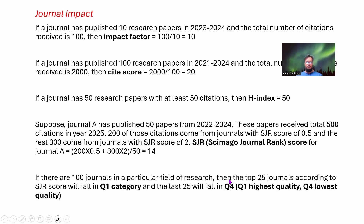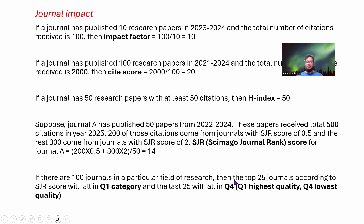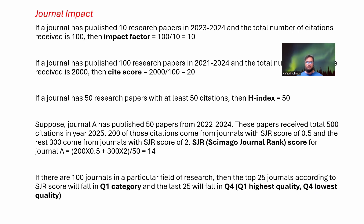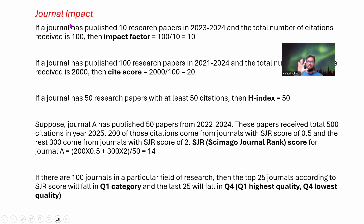The final thing you need to know is the journal quartile. There are Q1, Q2, Q3, and Q4 journals. Suppose there are 100 journals in a particular field of research — the top 25 journals according to SJR score will fall in the Q1 category and the last 25 will fall in Q4. Q1 is the highest quality and Q4 is the lowest. Ideally you should try to publish your papers in Q1 journals, but if you cannot then you can go to lower categories as well.